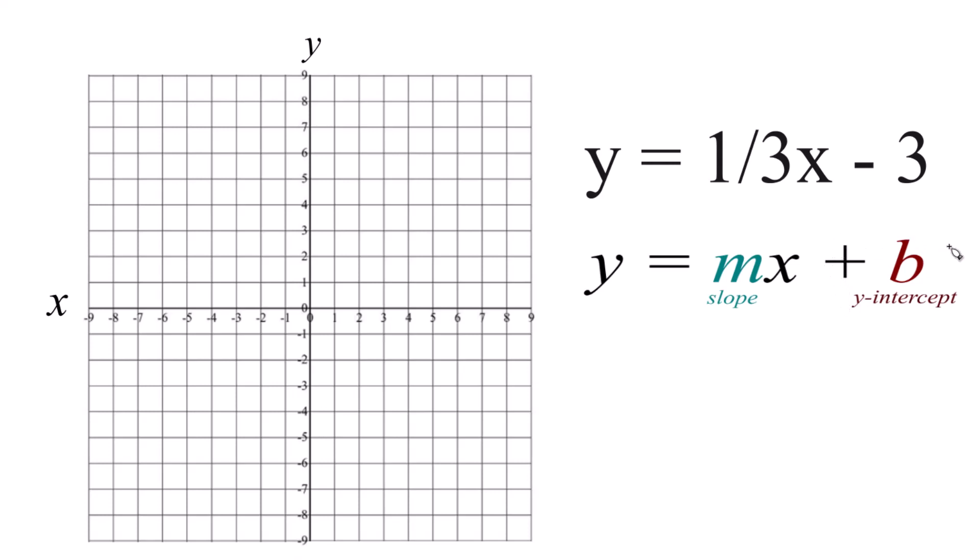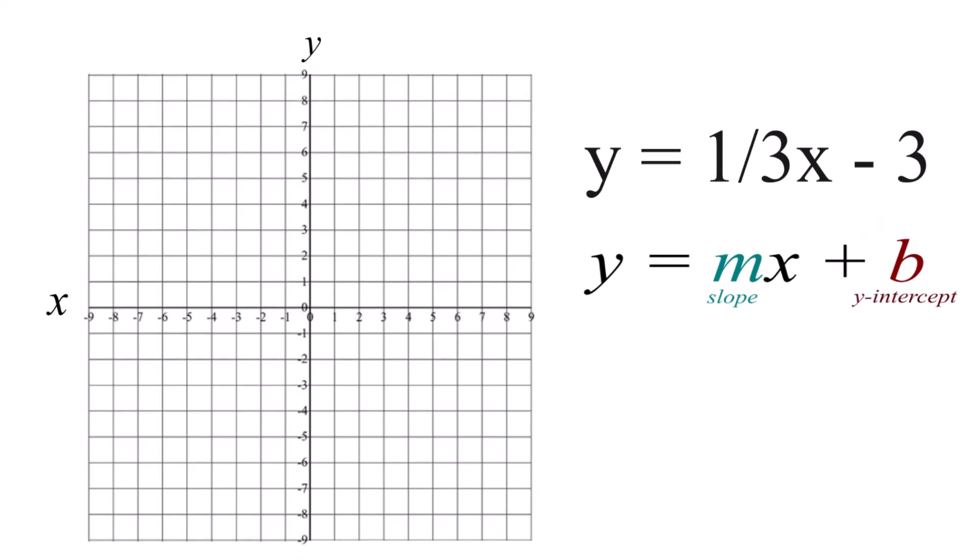So let's look at the y-intercept. That's b, which is negative 3. What that means is on our graph here, we're going to cross the y-axis at negative 3. That's where our line will cross the y-axis, right there at negative 3.